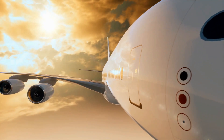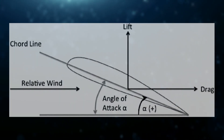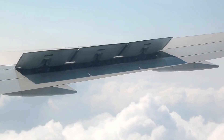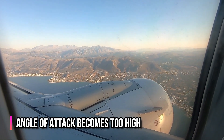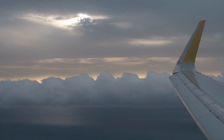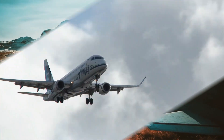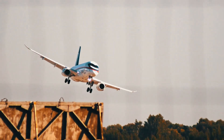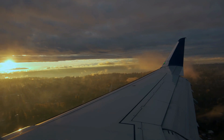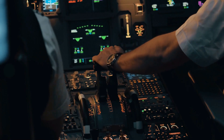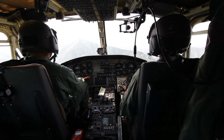The angle of attack is another important factor in generating lift. It is the angle between the wing and the oncoming airflow. As the angle of attack increases, the lift generated by the wing also increases. However, if the angle of attack becomes too high, the airflow over the wing can become disrupted, and the wing may stall, which can cause the airplane to lose lift and potentially crash. To maintain the lift needed to stay in the air, the airplane must maintain a certain speed known as the stall speed—the minimum speed at which the wings can generate enough lift. The airplane's speed is controlled by the pilot, who uses the throttle to adjust engine power and the control surfaces to maneuver the airplane.